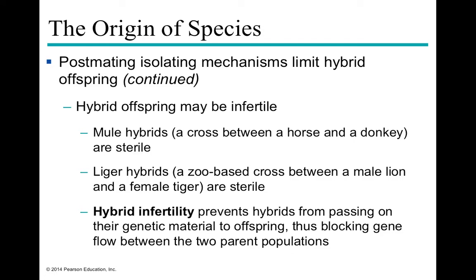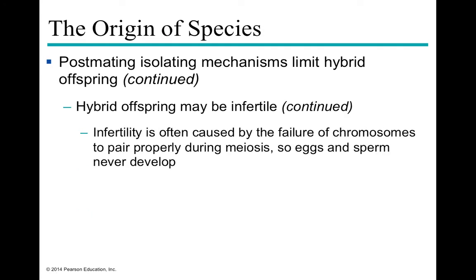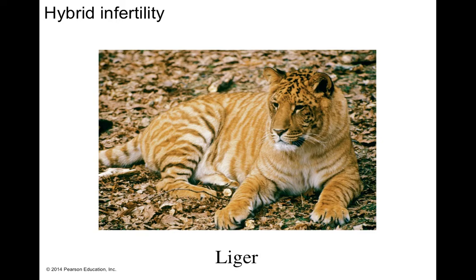Although a liger can be produced, that individual will be infertile and unable to pass on its genetic material, blocking gene flow between the two parental populations. The infertility of hybrid offspring is generally due to the failure of chromosomes to align properly during meiosis. As we saw with meiosis, it requires a very specific lineup of chromosomes, and so sperm and eggs generally don't develop properly in something like a liger.